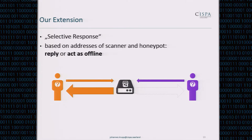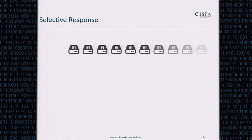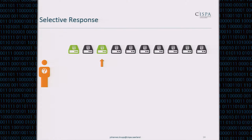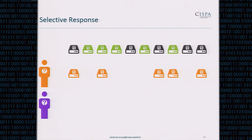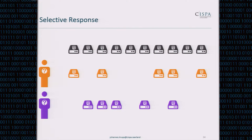This sounds useless at first, but we installed not just one honeypot, but a number of them. When the orange scanner scans the first honeypot it might reply, the second might not, the third might reply again. After scanning the entire network, the orange scanner will have found exactly the set of honeypots that replied to him. When the purple scanner comes along, it gets a different set of replies. So after scanning our entire network, the purple scanner will have found a different set of honeypots — effectively we've imposed a unique fingerprint on each scanner.